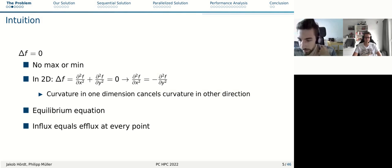It's also called the equilibrium equation, because in many settings, this represents some kind of equilibrium. For example, for heat flow, this is equivalent to the flow in x direction and the flow in y direction. And if they cancel each other out, that describes the stationary heat situation. Another way to look at this, is that influx must equal efflux at every point.